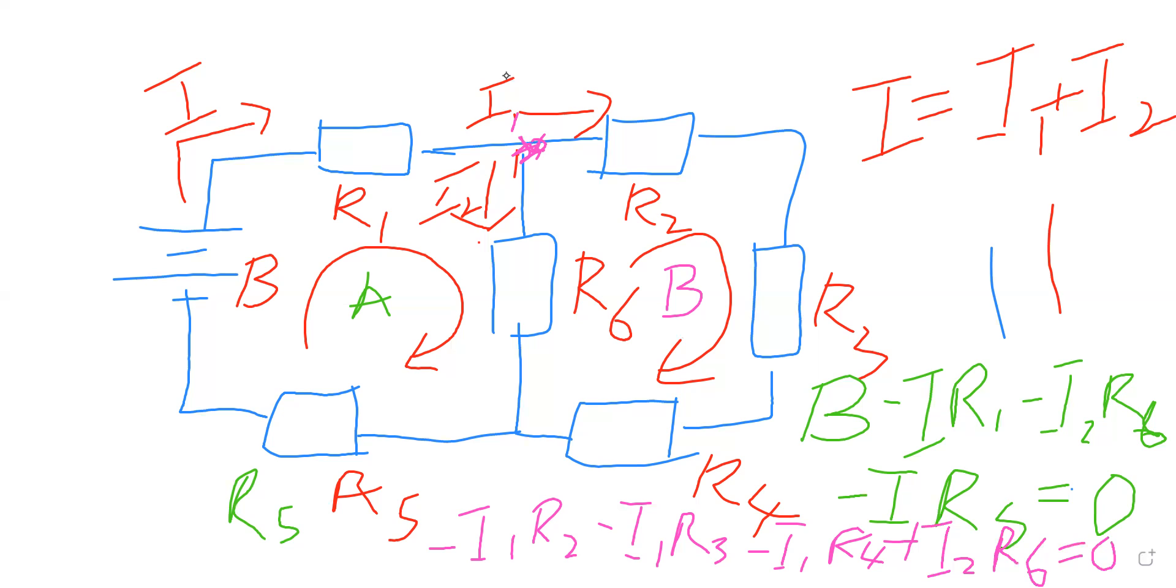The first equation says, the first Kirchhoff's voltage law says that B minus I R1 minus I2 R6 minus I1 R5.